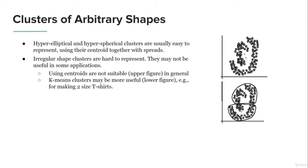Let's talk about clusters of arbitrary shapes. We've already seen that centroid information alone is not enough to represent elongated and non-hyper-spherical clusters, and k-means may not be the best algorithm for this. What we do is attach additional information to the centroid — specifically the standard deviation or spread of the cluster. The spread along with the centroid is sufficient to represent such elongated shapes.